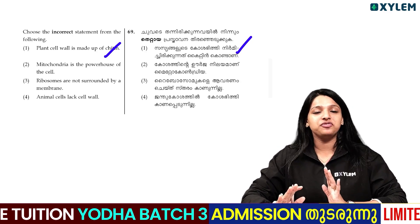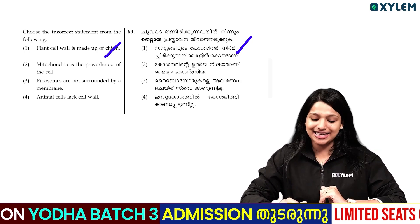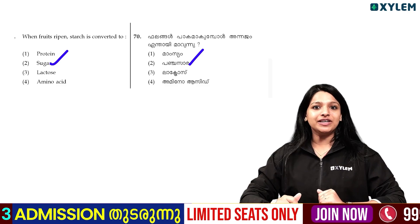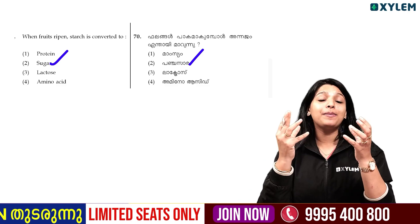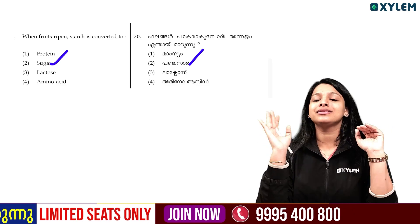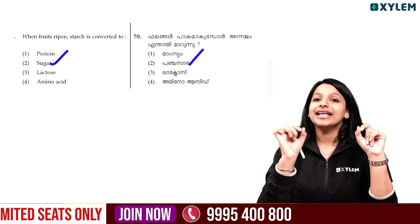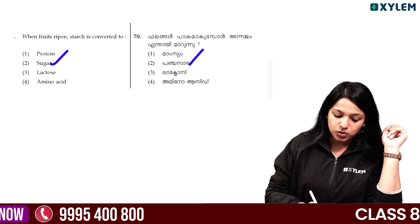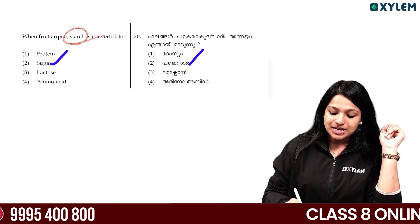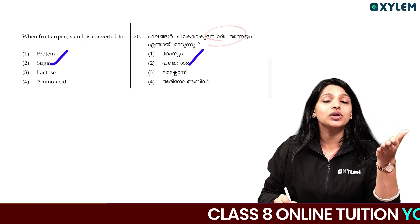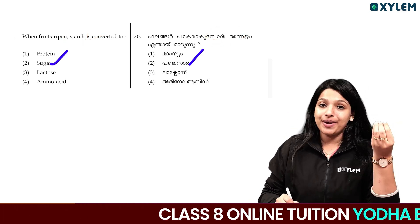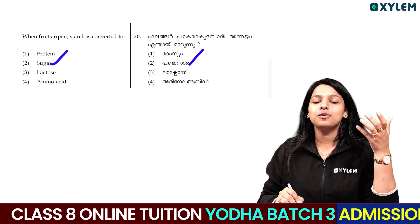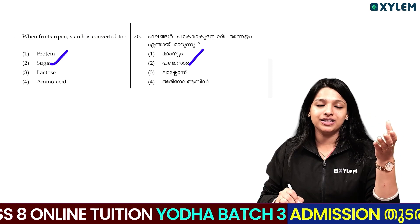When fruits ripen, starch is converted into sugar. This is the right answer.